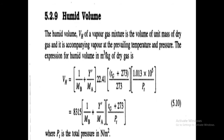Y' is the mass absolute humidity, Tg is the dry bulb temperature, and PT is the total pressure in Newton per meter square. After multiplying the numerical terms, the final expression is: VH = 8.315 × (1/MB + Y'/MA) × (Tg + 273)/PT.